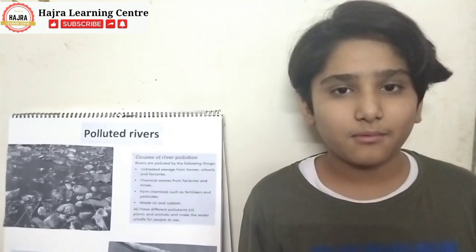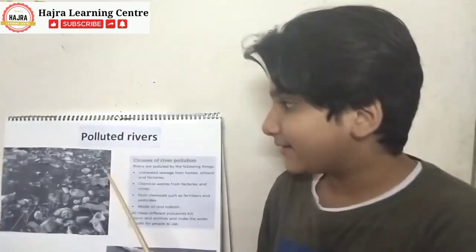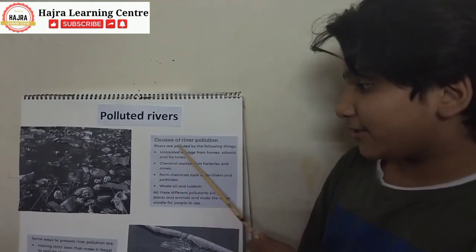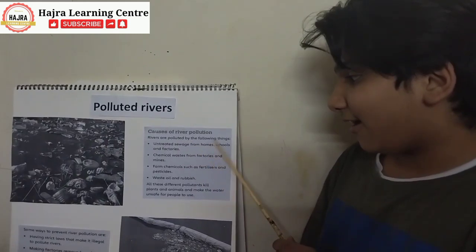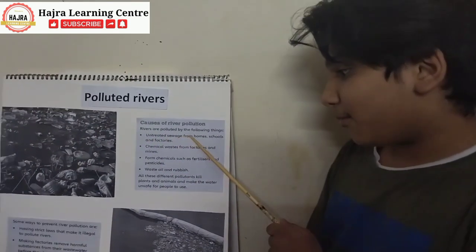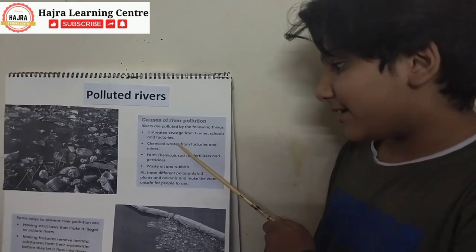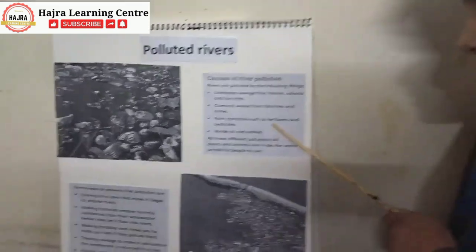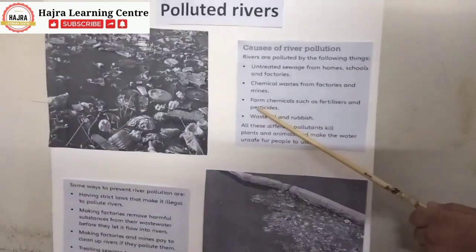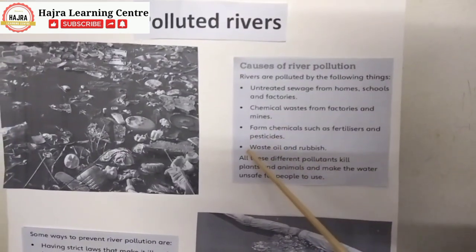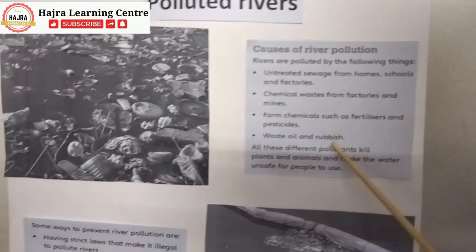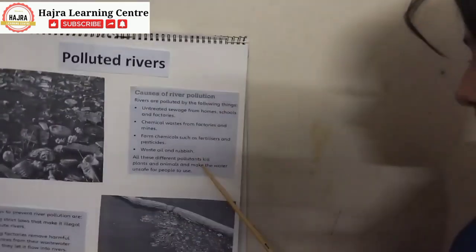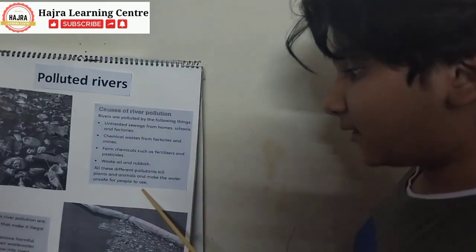Assalamu alaikum. My name is Akhilakya and I am from grade 6. Today I made a project on polluted rivers. I am telling you about the causes of river pollution. Rivers are polluted by: untreated sewage from homes, schools, and factories; chemical wastes from factories and mines; farm chemicals such as fertilizers and pesticides; oil and rubbish. All these different pollutants kill plants and animals and make the water unsafe for people to use.